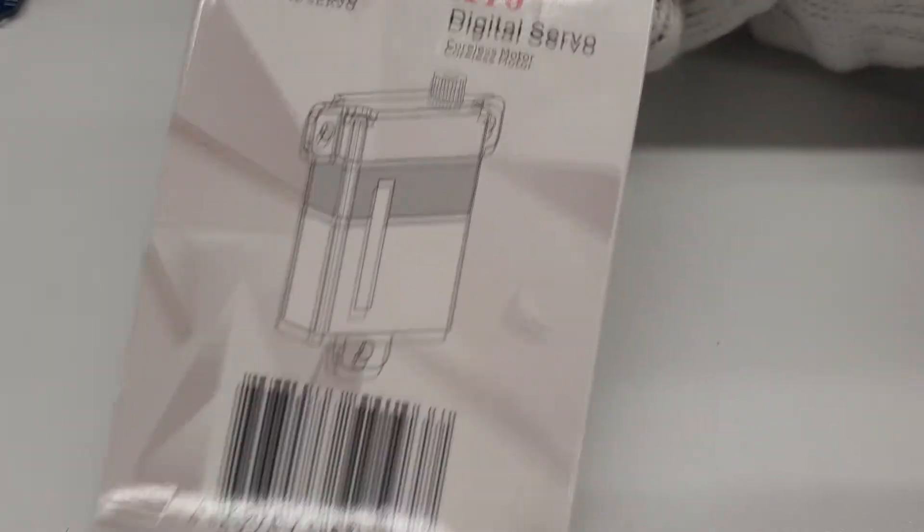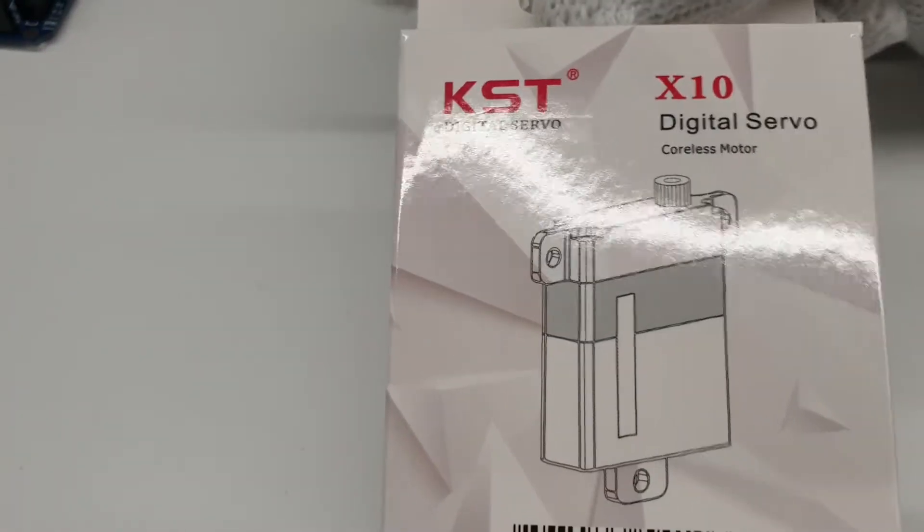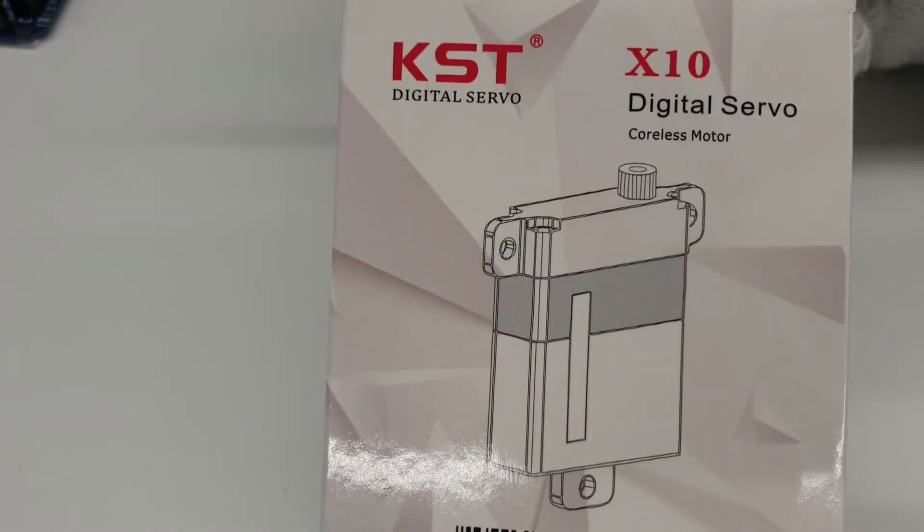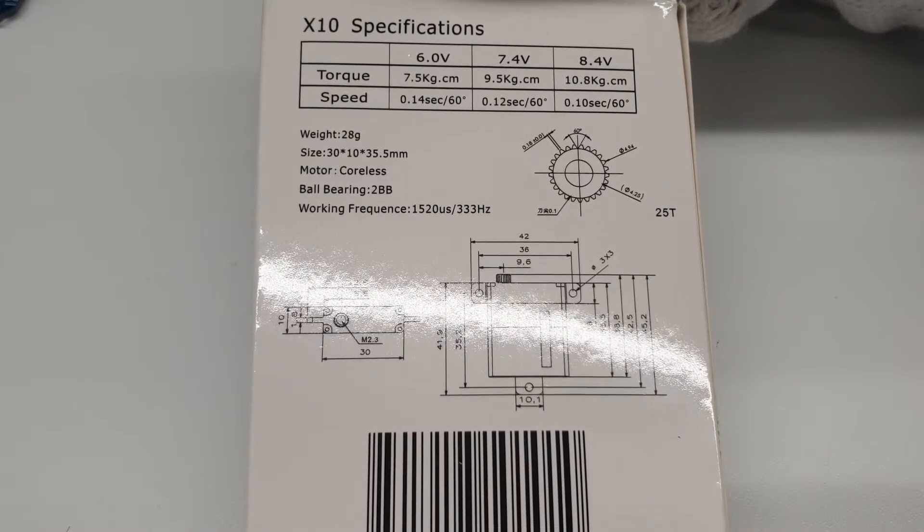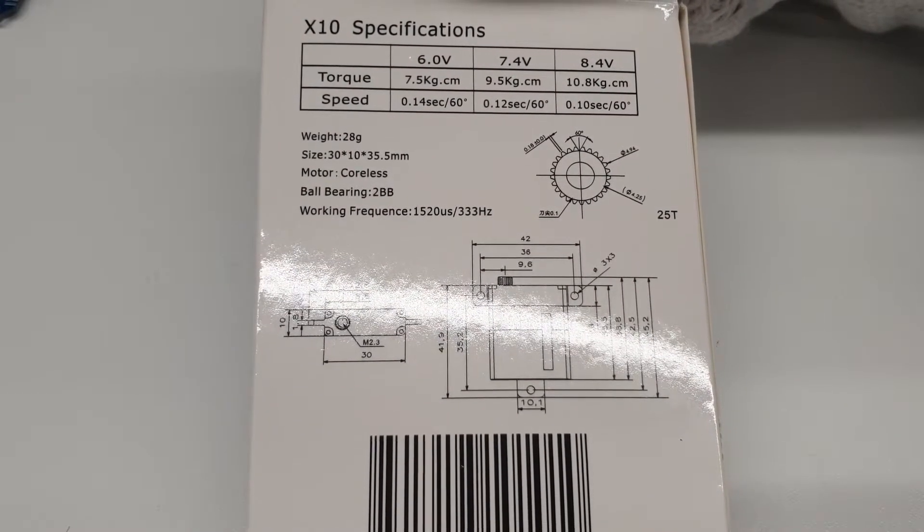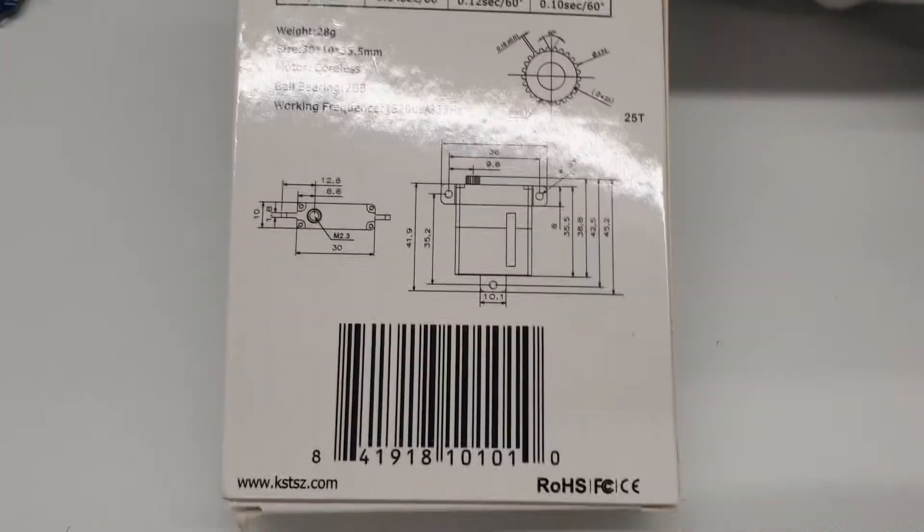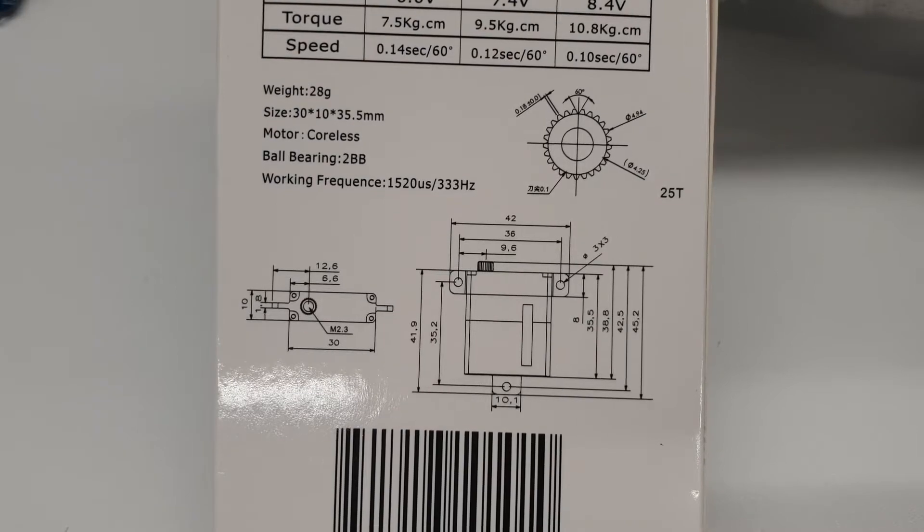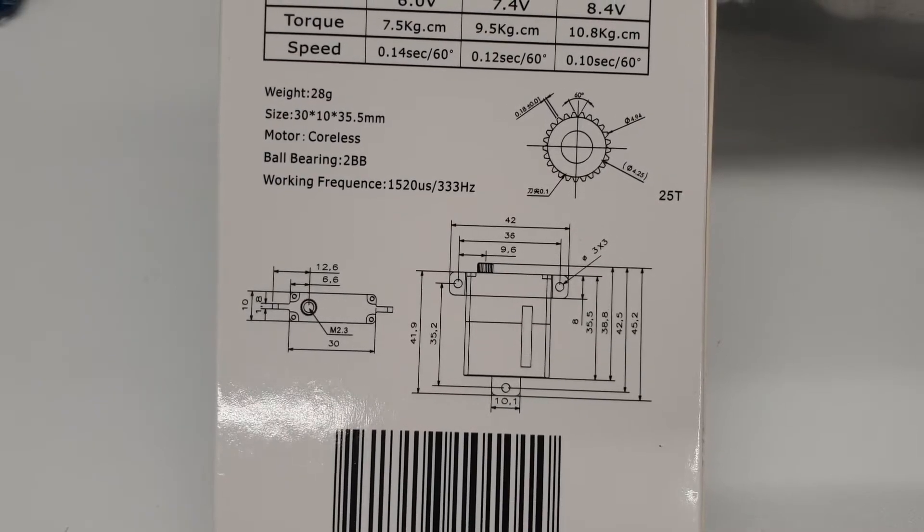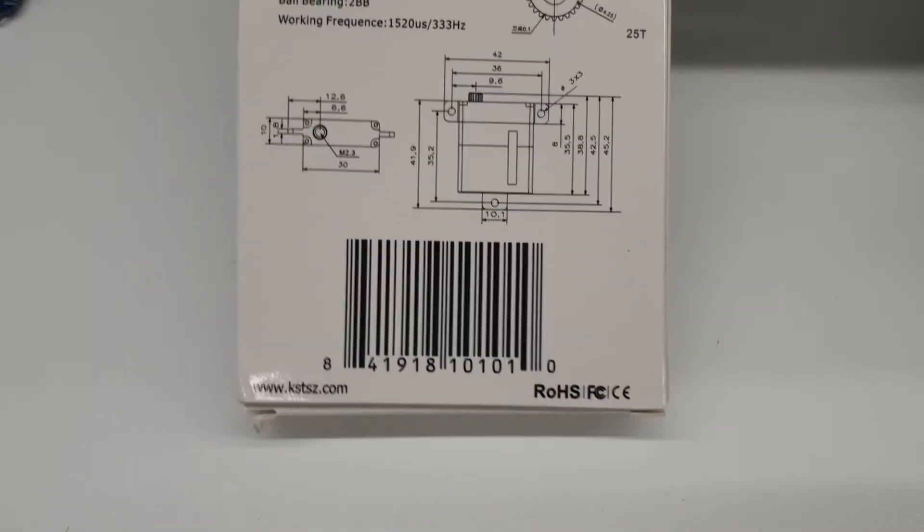This is how it looks like. So KST X10 digital servo with coreless motor from the side. The back side specs are given. It weighs like 28 grams and all of the other things.